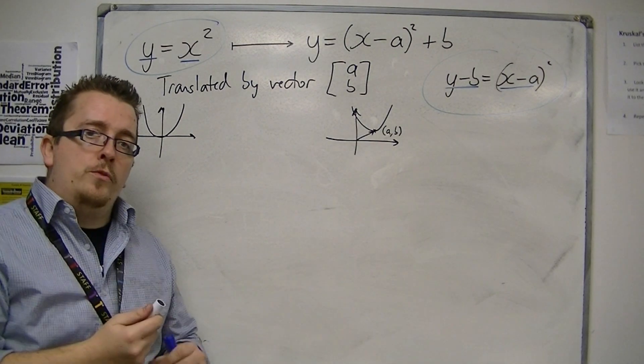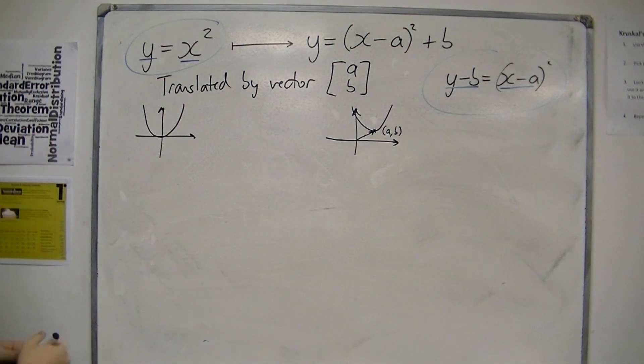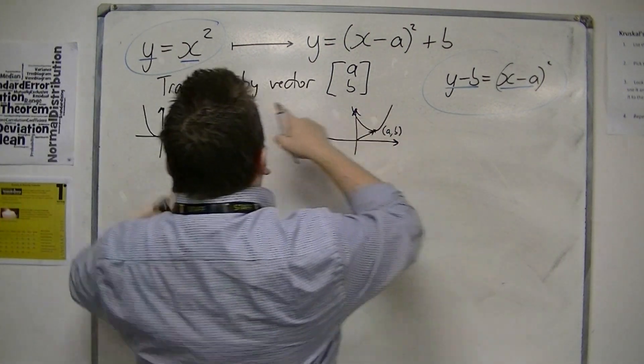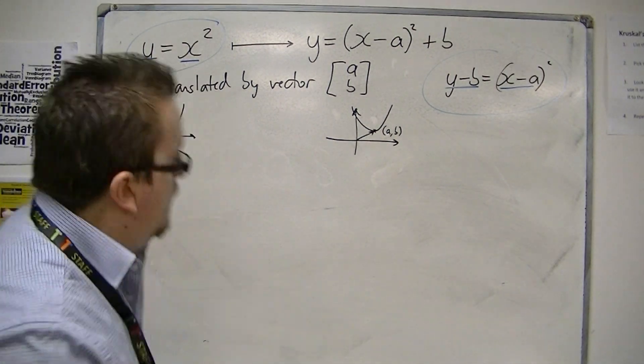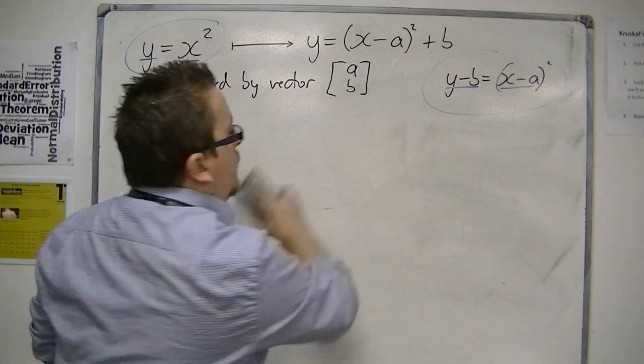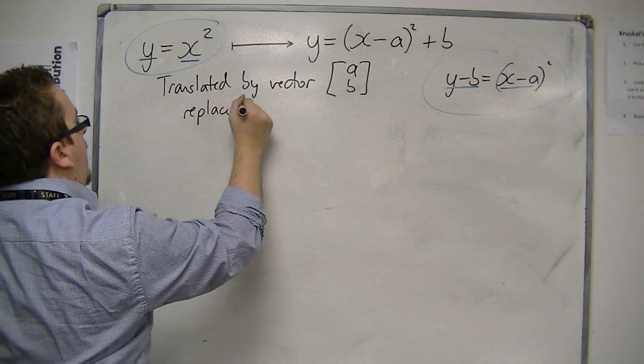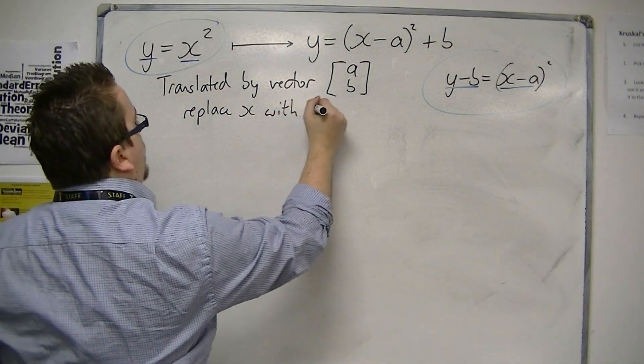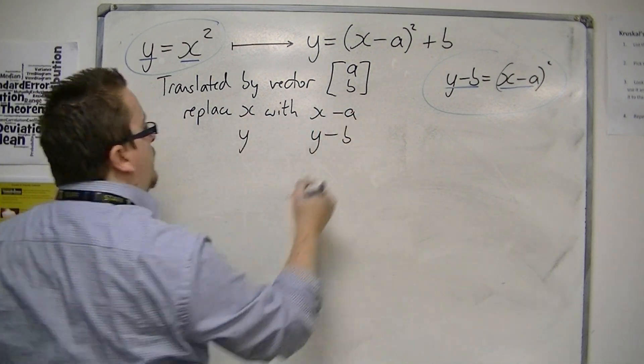And this is true of any translation. So if you translate by the vector [a, b], then you can replace x with x minus a, and replace y with y minus b.